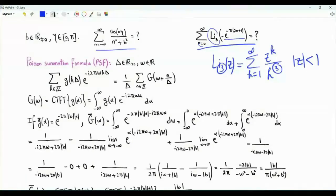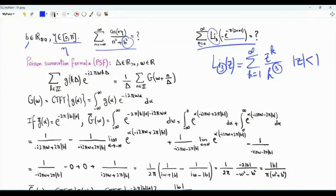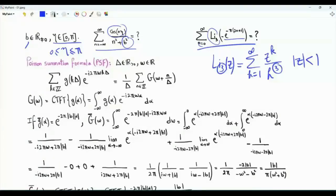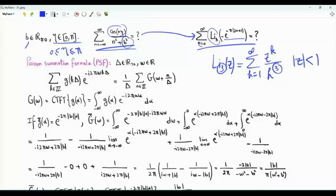We have another infinite sum, n from minus infinity to infinity. The sum is parametrized by two parameters: b, which appears in the denominator and is a non-zero real number, and eta between zero and pi, which appears in the numerator with cosine. We will evaluate this summation first, as it provides a result useful for evaluating the trilogarithm sum.